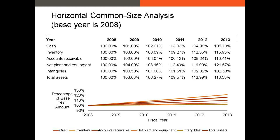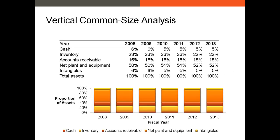We can see that net PPE is growing faster than cash and intangibles. With vertical common size balance sheets, we divide all line items by total assets — this is always the denominator. Every line item is a percentage of total assets. So $400 of cash in 2008 divided by $6,500 in total assets gives us roughly 6%. This gives us a sense of where our largest assets are, and on the right-hand side where our largest liabilities are. Here we see a slight decline in inventory and cash, but a slight increase in net PPE over time as a portion of total assets.